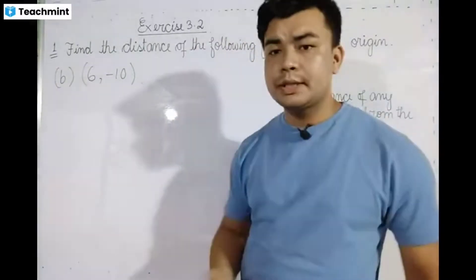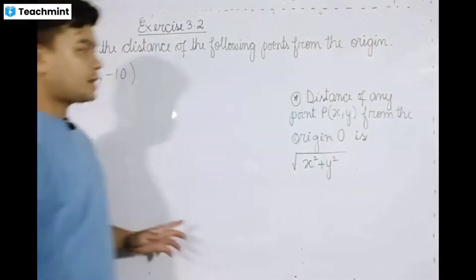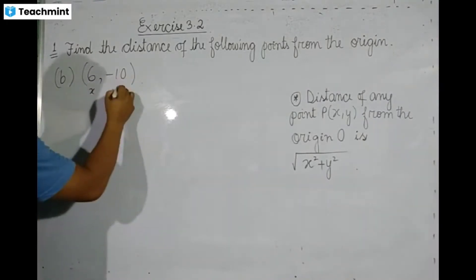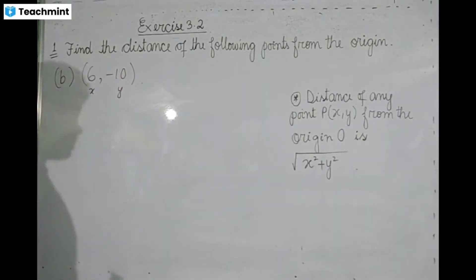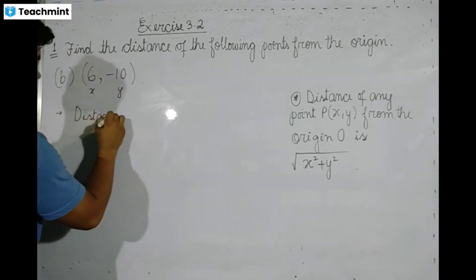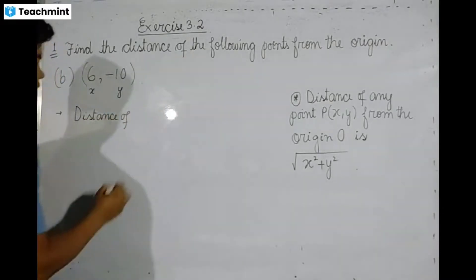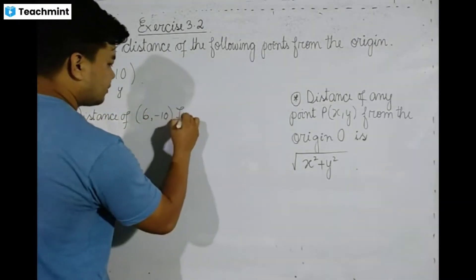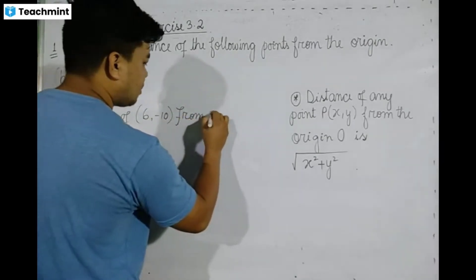Next up, question number (b). For the point (6, -10), where x = 6 and y = -10, we need to find the distance of (6, -10) from the origin.